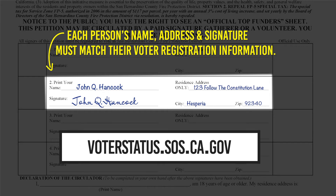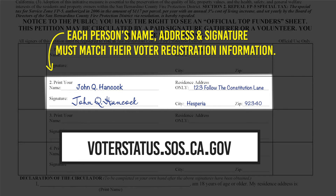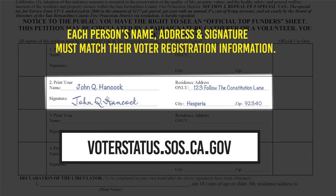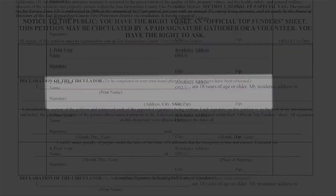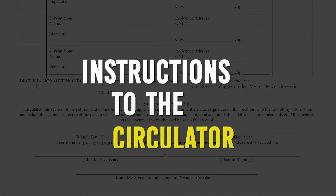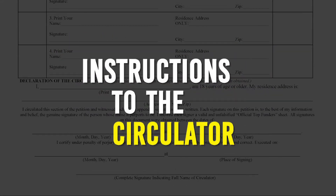If you have questions, visit voterstatus.sos.ca.gov to check voter status. It is perfectly legal for you to sign the petition as a registered voter and also to sign the petition as a circulator.